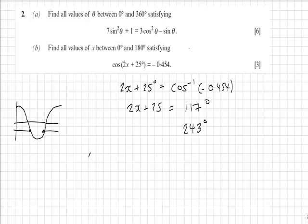Then we solve each of these equations. So 2x plus 25 is 117. So x will be 117 minus 25 over 2, which is 46 degrees.